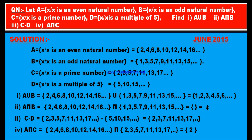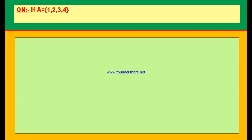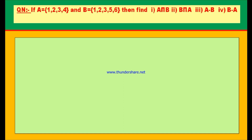Next question. If A = {1, 2, 3, 4} and B = {1, 2, 3, 5, 6}, then find A intersection B, B intersection A, A minus B, and B minus A. What do you observe from these solutions? This question appeared in March 2016.